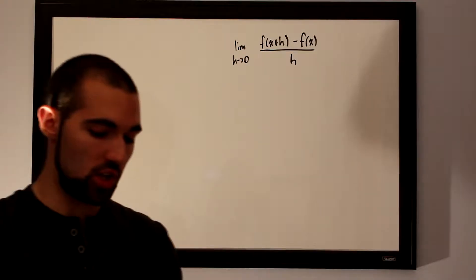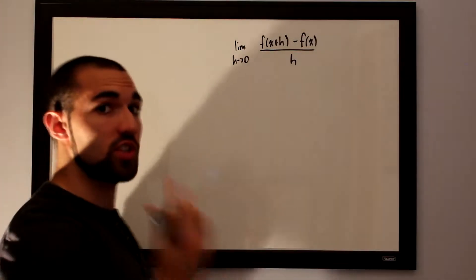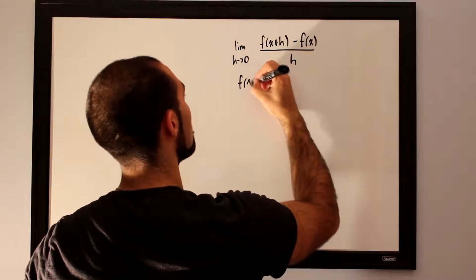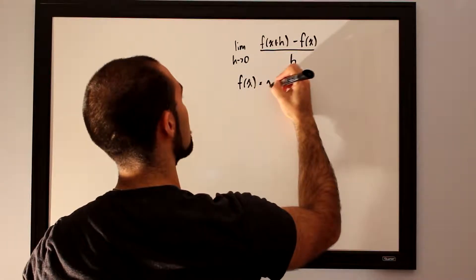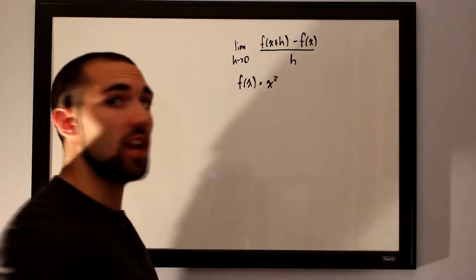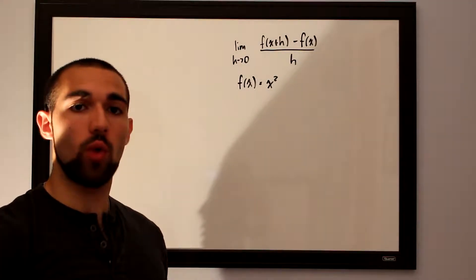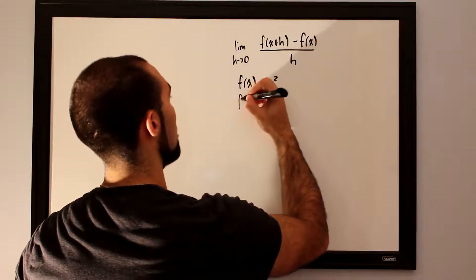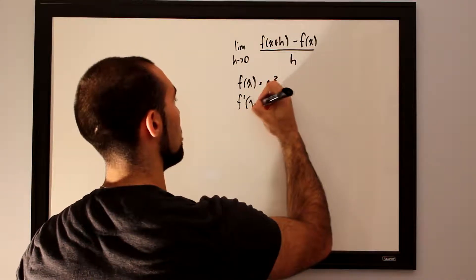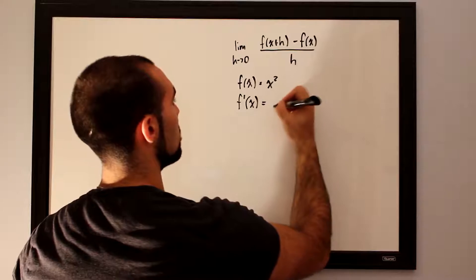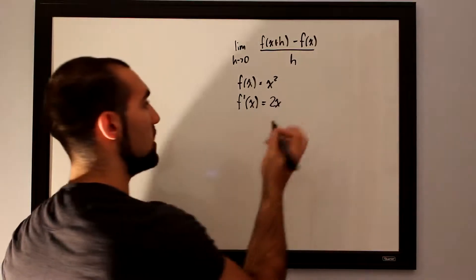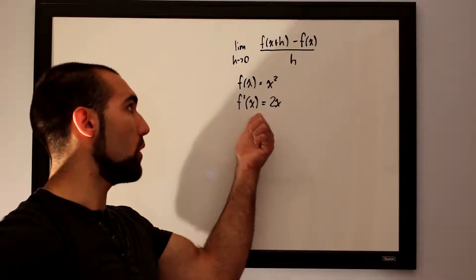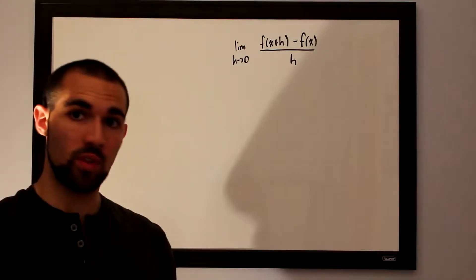2x is what we call the derivative of the function x squared. A little notation to be familiar with: if our initial f of x equals x squared, when we take the derivative of a function we write it as f prime of x — f with a little apostrophe — which equals 2x. This apostrophe tells you that this is the derivative of f of x.